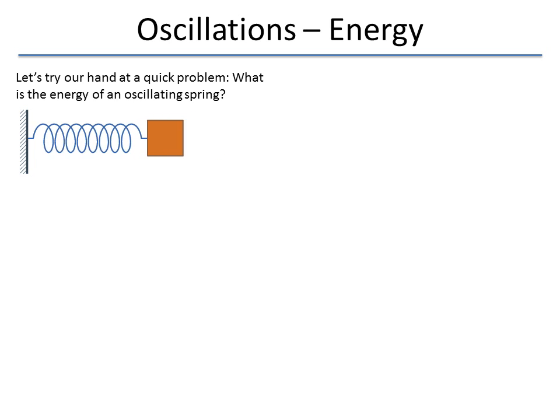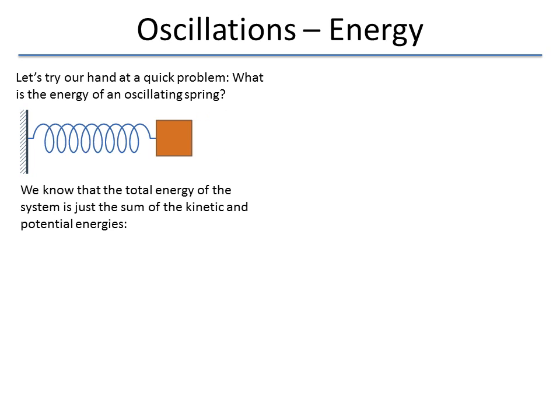We have a spring mass system that oscillates back and forth. It has some k value, some m value, some mass and some spring constant. And what we want to do is we want to know what's the total energy of the system at any point along its path. So we know from our equations that kinetic energy plus the potential energy is going to equal the energy. So now the question we ask is what is the kinetic energy? What's the potential energy?